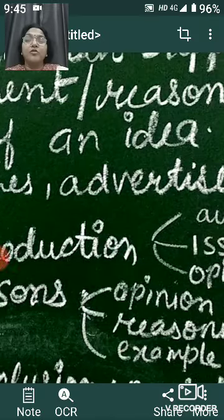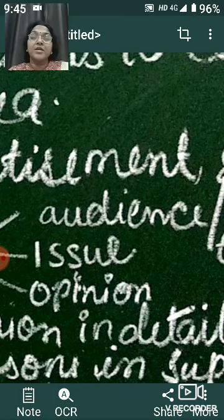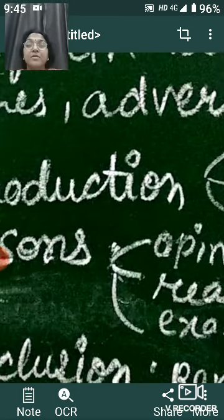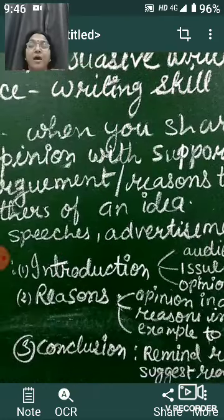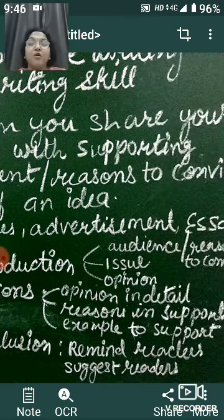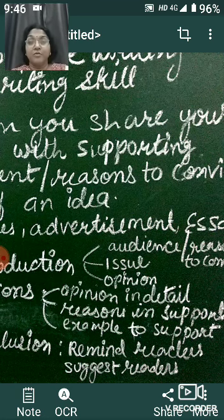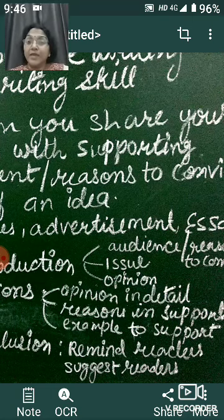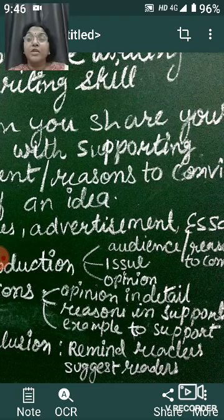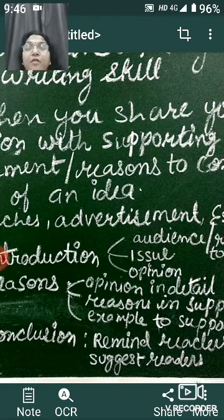Now, in the introduction, there are three sub-parts. Number one is audience or reasons to convince — when writing persuasive writing, we give an introduction to the audience, the one who is wishing to hear or is a viewer. Secondly, we talk about the issue — what is the problem or topic which has been allotted. We address the audience, give the reason to convince them, then jump to the issue — why we are writing the persuasive writing — and then our own opinion. These three things come in the introduction section.